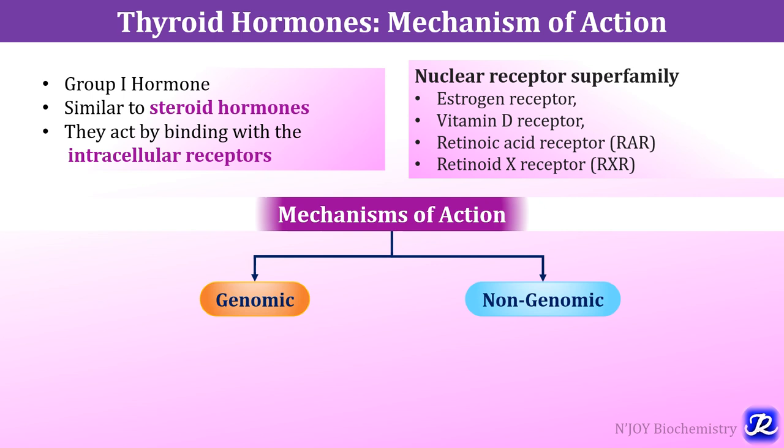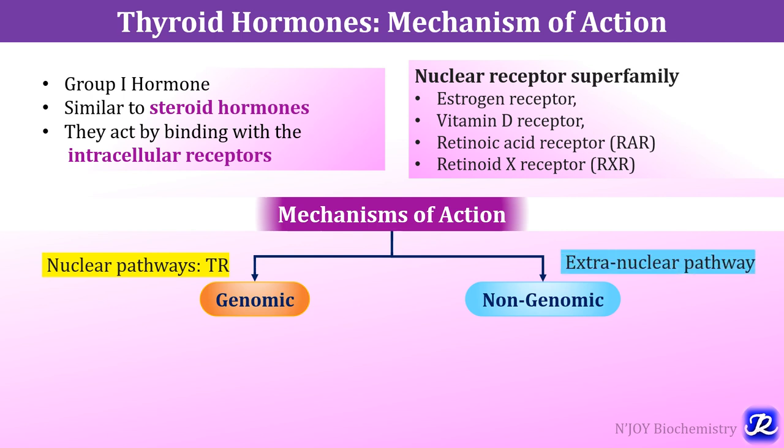There are two mechanisms by which thyroid hormones can act. First is genomic and the other is non-genomic. The genomic pathway directly influences gene transcription and further translation, while the non-genomic pathway involves more rapid cellular changes because they do not require transcription and translation. The genomic pathway is a nuclear pathway and the non-genomic pathway is an extra-nuclear pathway.